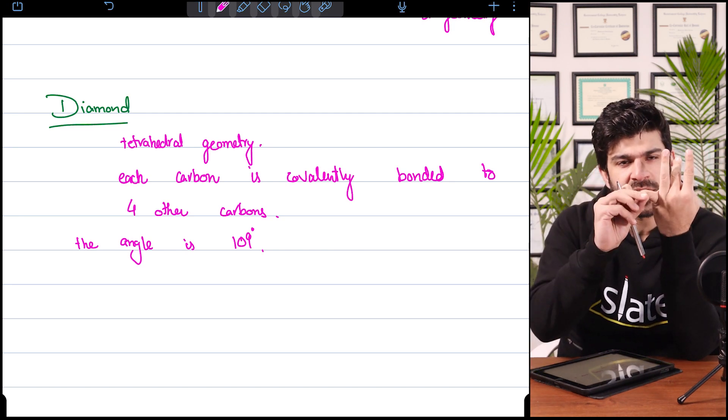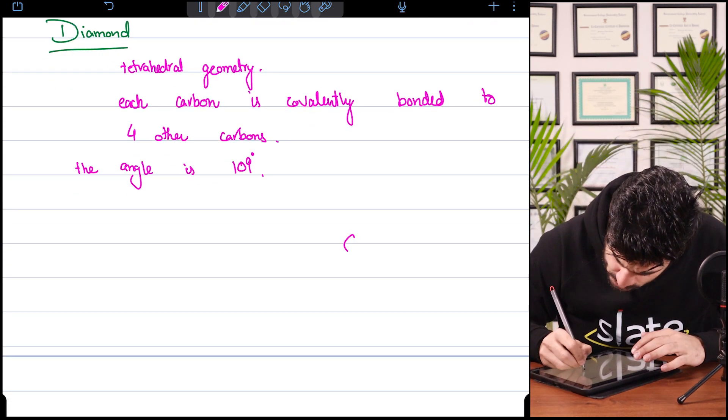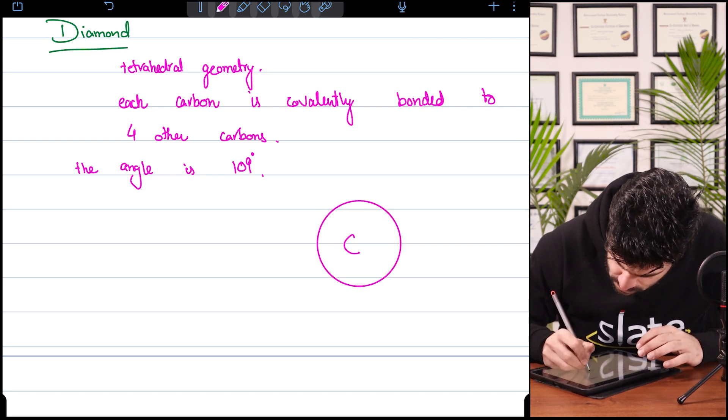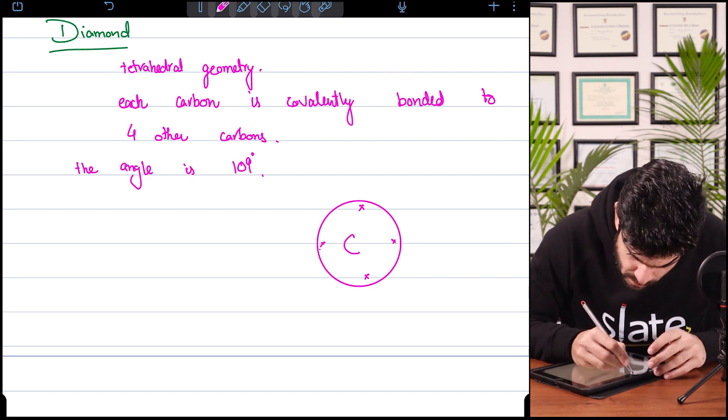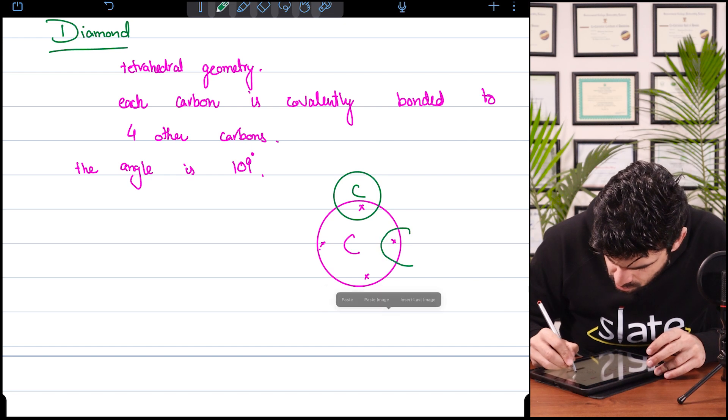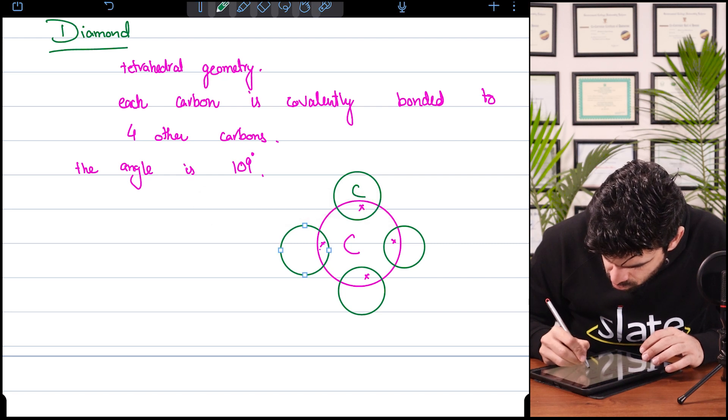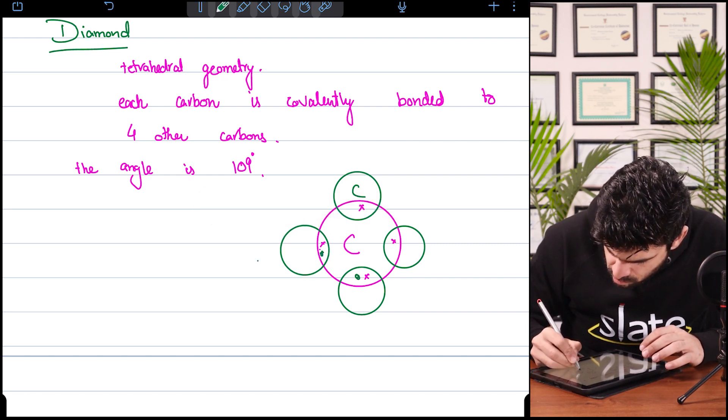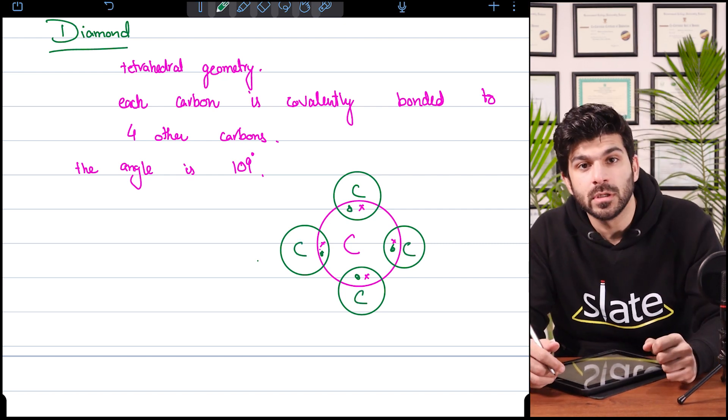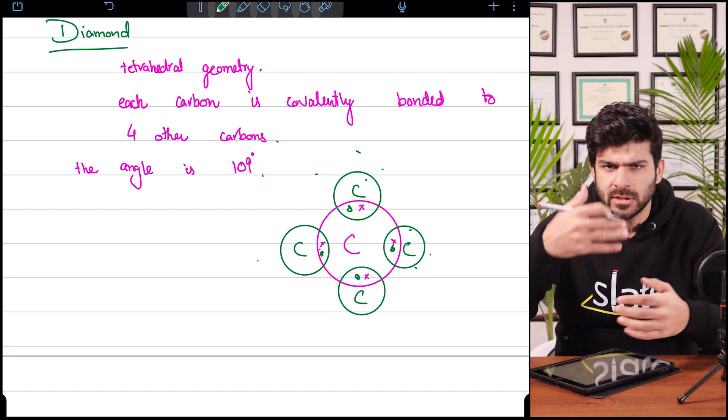One electron will be shared with another carbon, another with another carbon, so all four with different carbons. This is one carbon, and then we have four other carbons. That's how it goes and the structure will keep on repeating itself.